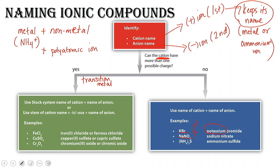If it's a transition metal, it probably has more than one type of charge, and we can use this naming system where we use a Roman numeral for the charge. So here for FeCl2, iron has a two plus charge. How do we know? Because chlorine has a minus one charge — chlorine is in group 7A, it has a minus one charge — and we have two chlorine atoms, so we know that iron must have a plus two charge.